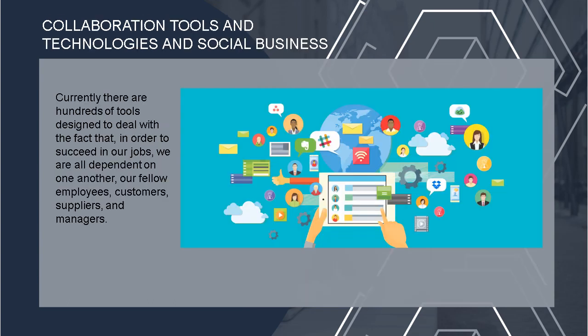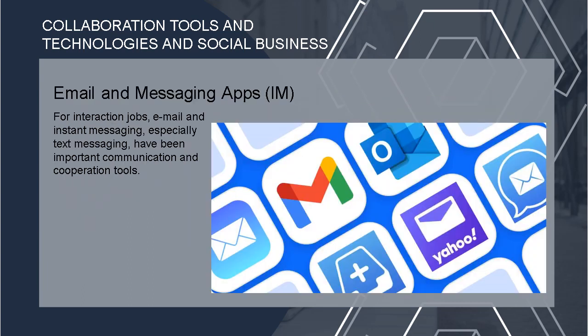Creation tools, technologies, and social business. Currently there are hundreds of tools designed to support collaboration. We are all dependent on one another — fellow employees, customers, suppliers, and managers — as well as on the systems, applications, and tools used in social business. There are high-end and free products available. Number one on the list is email and messaging apps — email and instant messaging, especially text messaging, have been important communication and cooperation tools. For interaction, we commonly use Gmail and Yahoo.